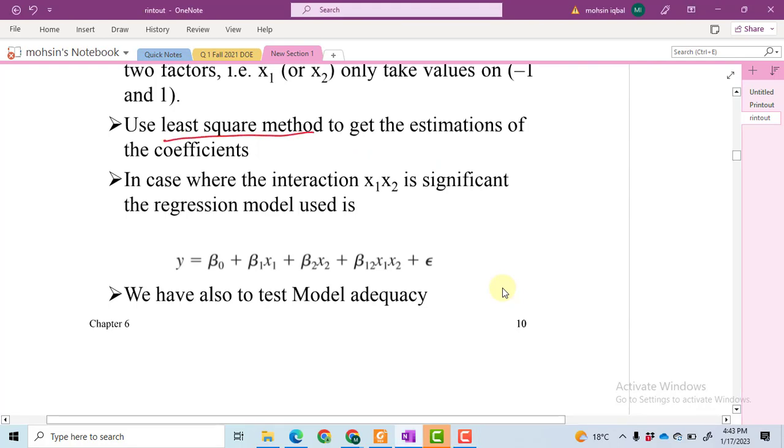Those models that have a significant interaction term, then we will have to add x1 x2. This is the interaction term, and beta 1 2 is the slope of the interaction.